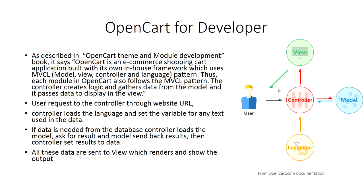OpenCart is based on the MVCL pattern. The user requests to the controller through the URL. The controller loads the language and sets the variable for any text used in the data. If data is needed from the database, the controller loads the model, asks for the result, and the model sends back the results. Then the controller sets results to the data and all those data are sent to the view.